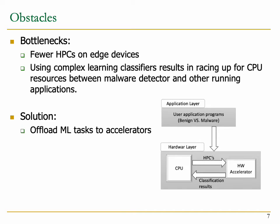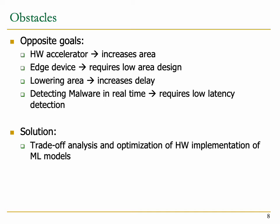ML hardware accelerators have shown to be low-power, low-latency, and cost-effective compared to general-purpose processors. However, the limited area available on an embedded edge device adds another constraint. Lowering the area footprint of ML in hardware increases latency, while we require low latency to detect malware signatures in real time. Therefore, there are two opposing goals, and satisfying both at once requires a delicate trade-off analysis and optimization, which is tedious to achieve manually, especially for software engineers not familiar with custom hardware design.